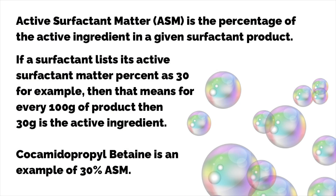Active surfactant matter, or ASM for short, is the percentage of the active ingredient in a given surfactant product. So if a surfactant lists its active surfactant matter percent as 30, for example, that means that for every 100 grams of product, 30 grams of that is the active ingredient.